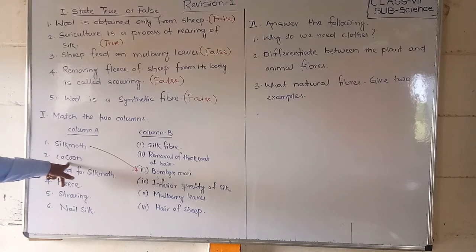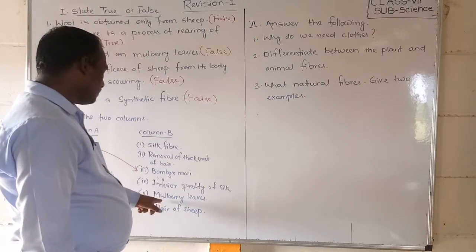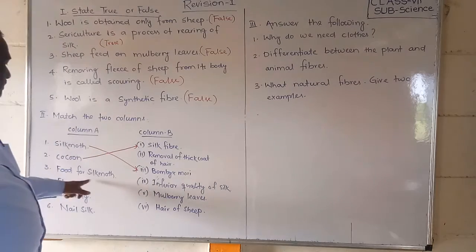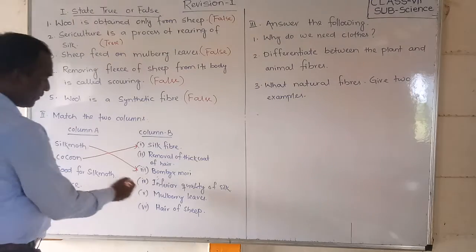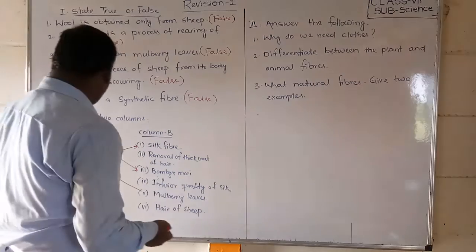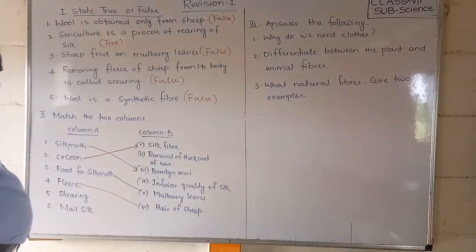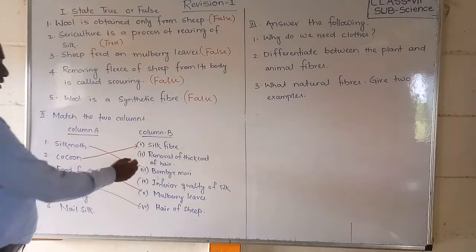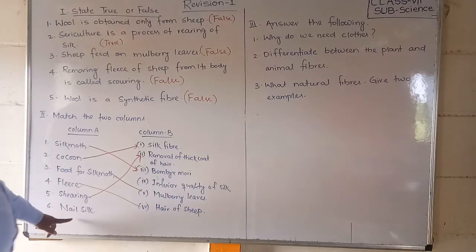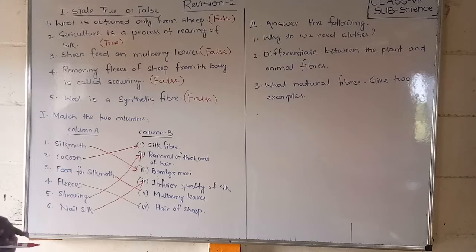Next, cocoon — cocoon gives us silk fiber, so cocoon matches with silk fiber. Food for silk moth is mulberry leaves, because when the caterpillar hatches out it starts feeding on mulberry leaves. Fleece is the hair of sheep. Shearing means the removal of the thick coat of hair from the sheep — that process is called shearing. Pashmina is one type of silk — it is an inferior quality of silk.